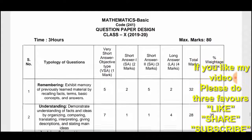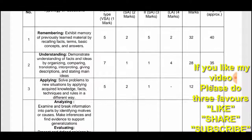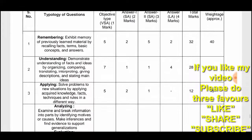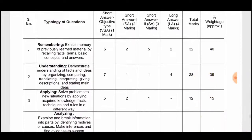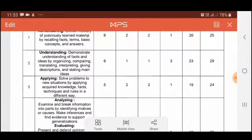Now in Basic Maths, there is no change at all in the structure — same 20 objective one-mark questions, six two-mark questions, eight three-mark questions, and six four-mark questions. The only change they have done is in the remembering part. You can see in Basic: in objective, five questions are remembering, seven are understanding, and five are applying. But in Standard, six were remembering, six were understanding, and five were applying.